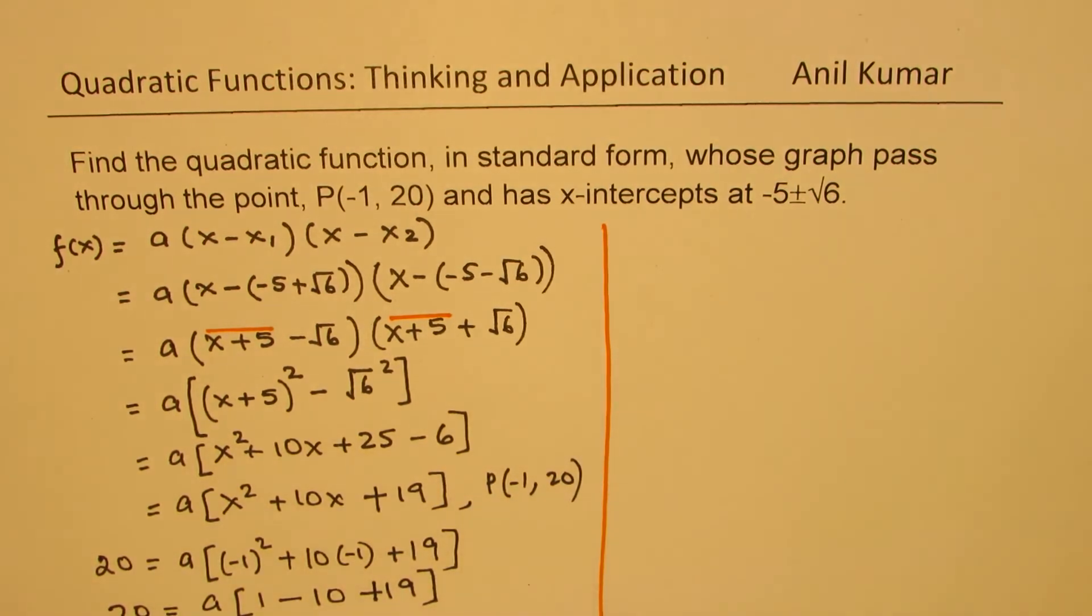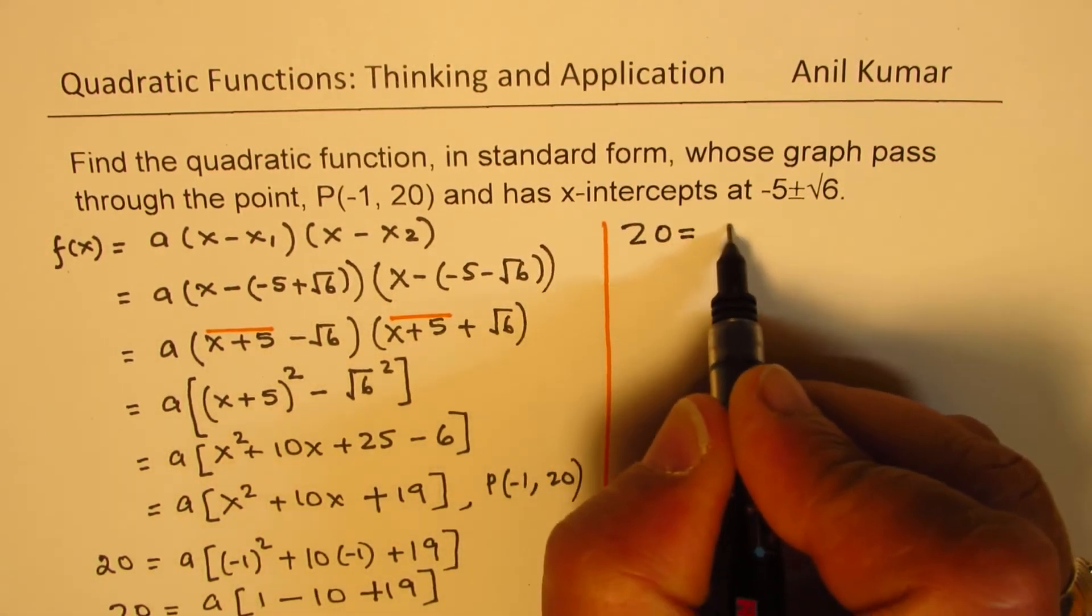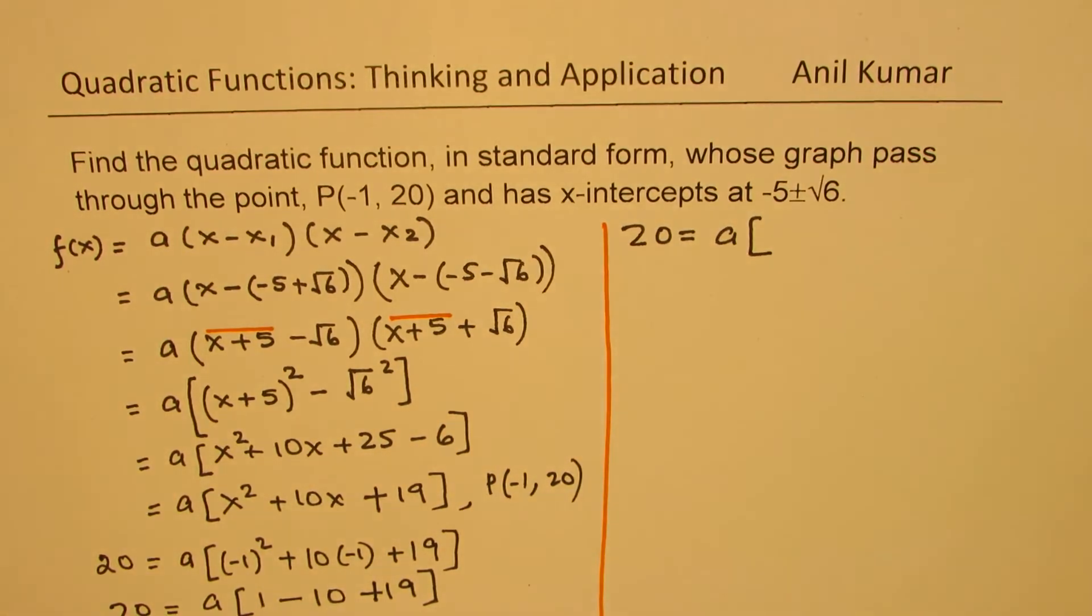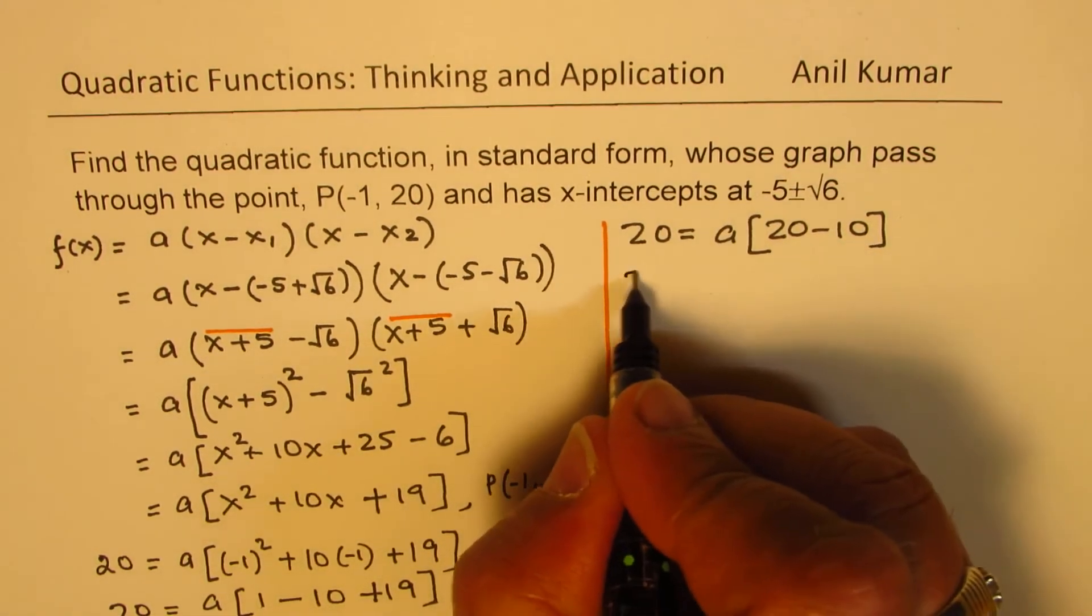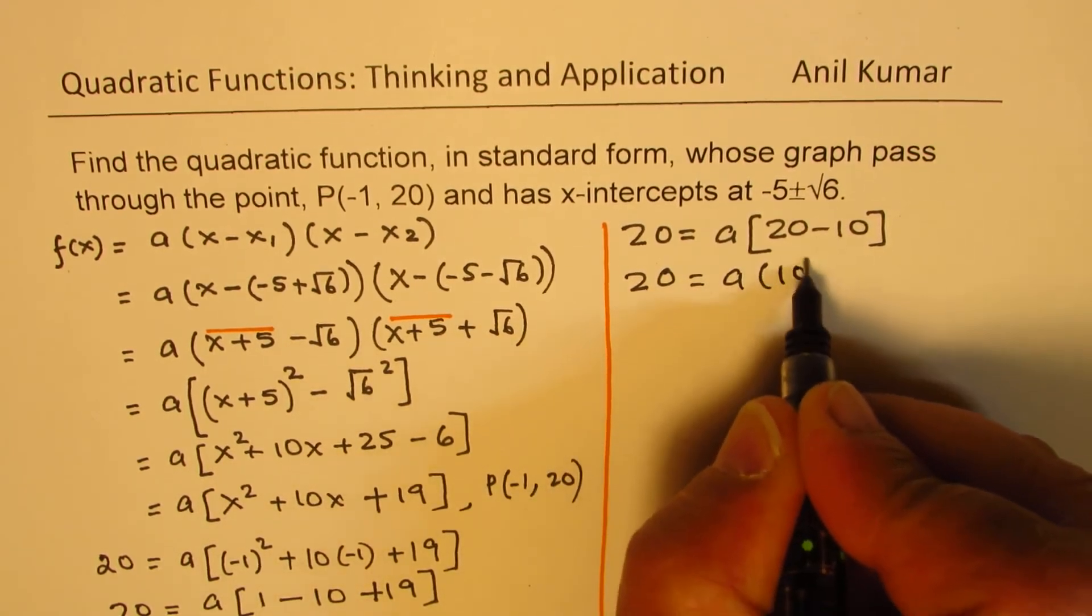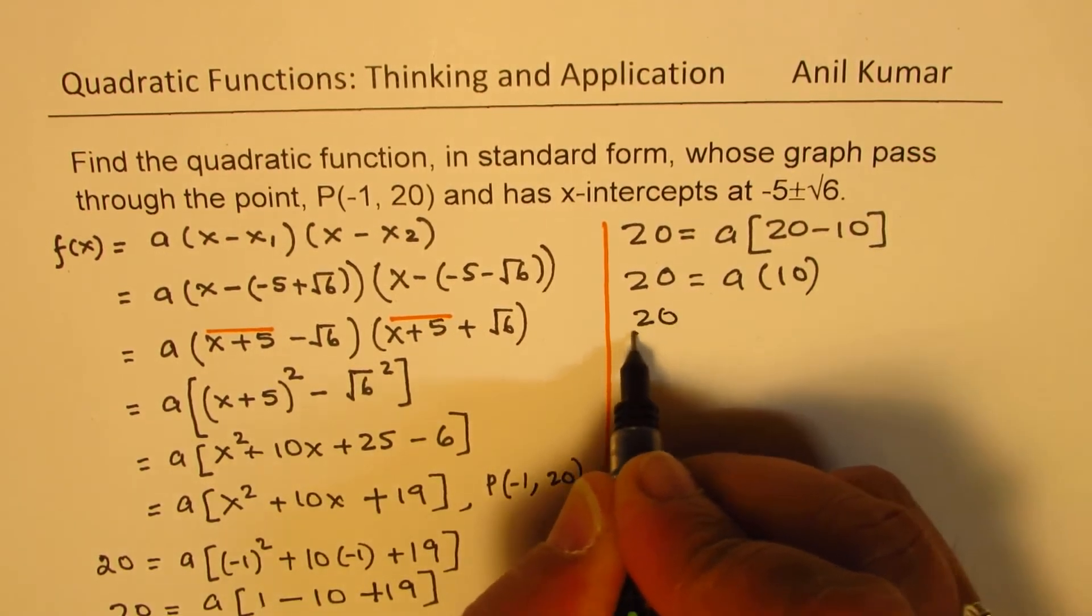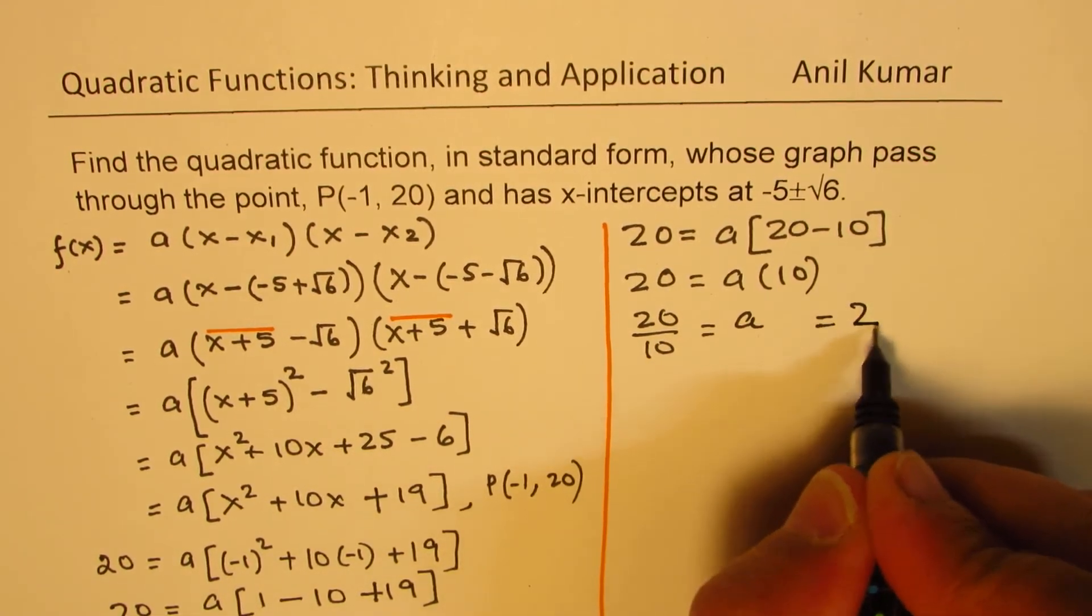So let's take this equation on the right side and solve. So we have 20 equals to a times... 1 - 10 + 19. So 1 + 19 is 20. We can write this as 20 - 10. So we get 20 equals to a times 10, or 20 divided by 10 is equal to a. So we get the value of a as 2.